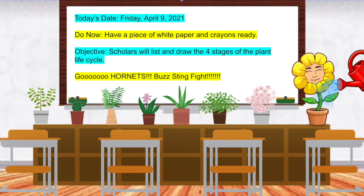Alright IDEA Harlingen first grade scholars, it is now time for science class with Mr. Garcia. Today's day is Friday, April 9, 2021. Our do now is to have a piece of white paper and crayons ready. Our objective: scholars will list and draw the four stages, that's right, the four stages of the plant life cycle.